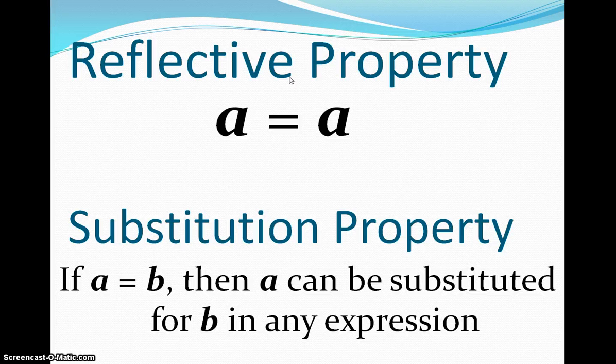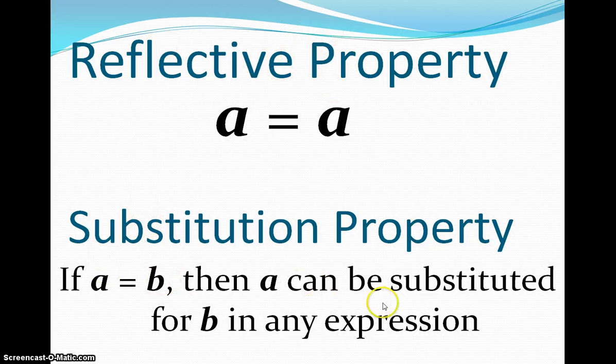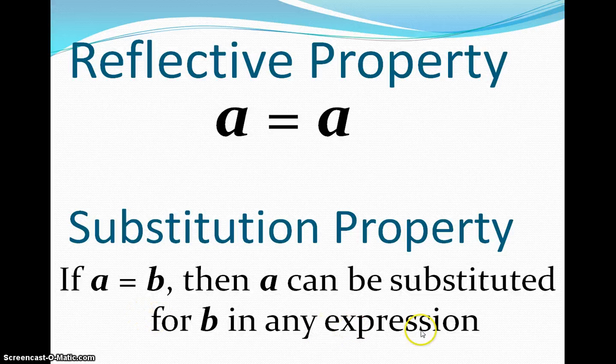The next one is a little bit more complicated, and from my work last year, it's kind of the hardest one to basically visualize, and so this one will basically follow us for almost the rest of the year. But the substitution property, which is if A is equal to B, then A can be substituted for B in any expression.